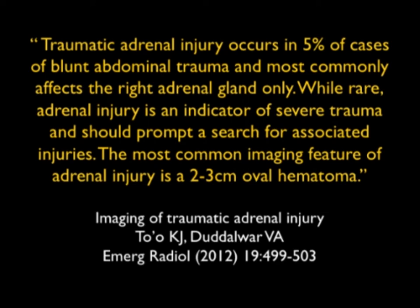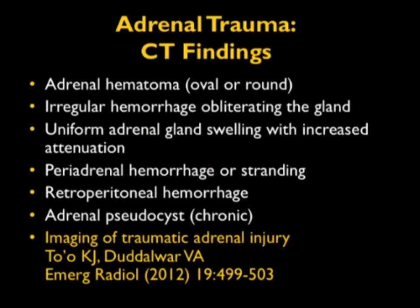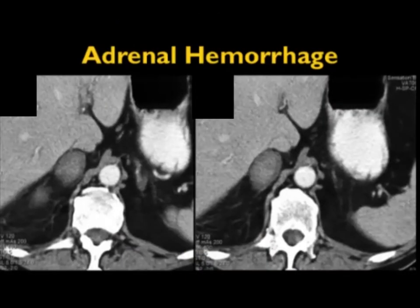While rare, adrenal injury is an indicator of severe trauma and a prompt search for associated injuries should be done. The most common imaging feature is a 2–3 cm oval hematoma. On CT, it's often very high density, but sometimes only suggestive, so high clinical suspicion is very important. When you talk about adrenal hemorrhage: the adrenal is oval or round, hemorrhage may obscure the gland, swelling is not uncommon, and periadrenal or retroperitoneal hemorrhage can occur. Here's a classic case of right adrenal hemorrhage — oval, high-density adrenal. You treat it as hemorrhage until proven otherwise.